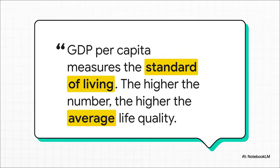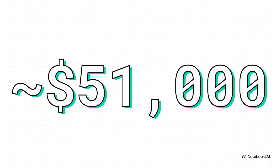The thinking is simple. If a country produces more stuff per person, then on average, each person probably has more income and access to more things. To put a real number on this, let's take a look at Israel. Its recent GDP per capita was approximately $51,000. Now out of all the countries in the world, that puts it somewhere in the top 20, which is considered a very high standard of living. That single number helps us compare the economic well-being of one nation to another.